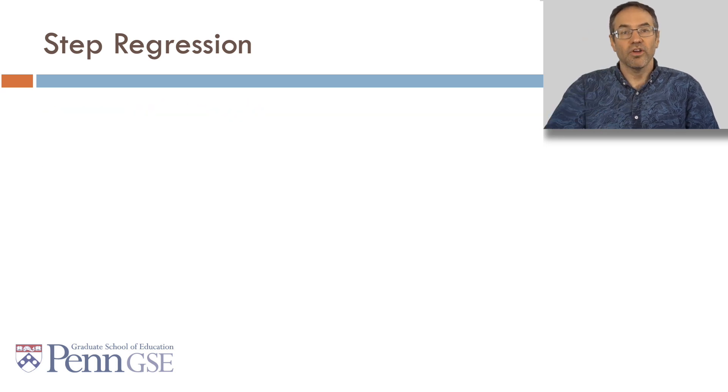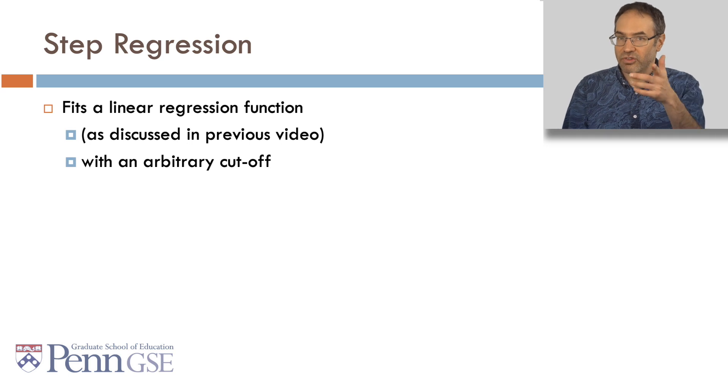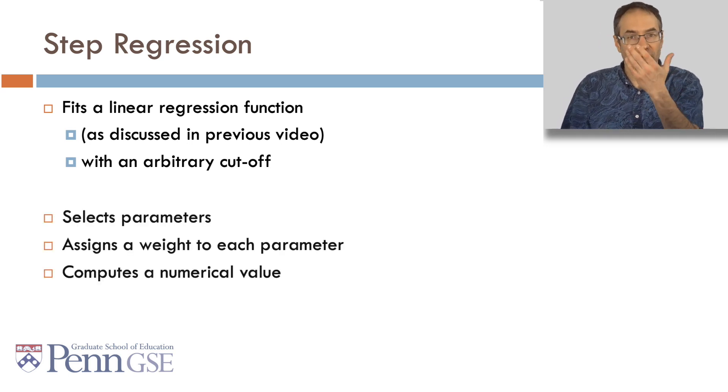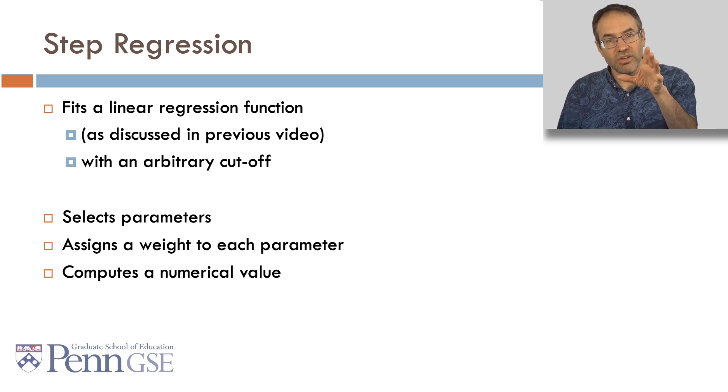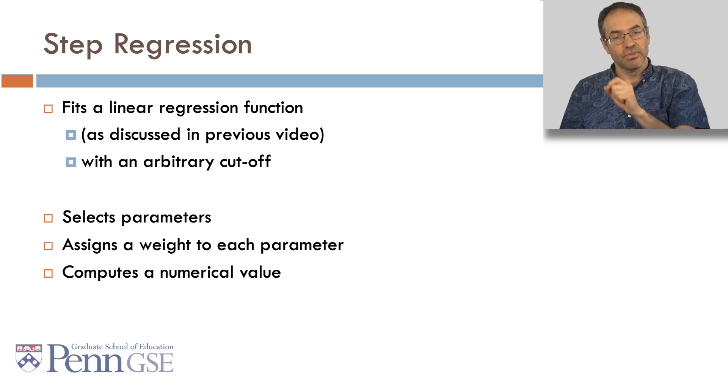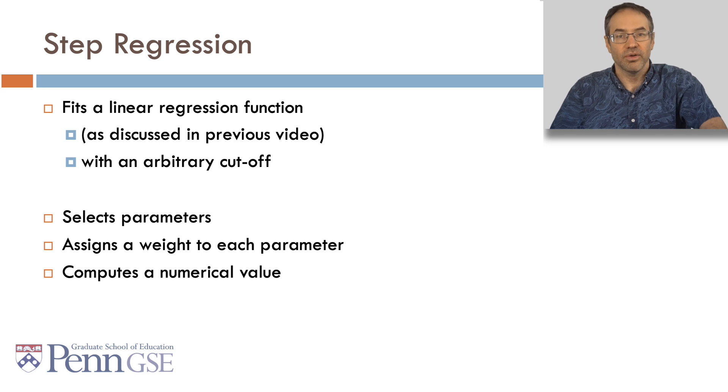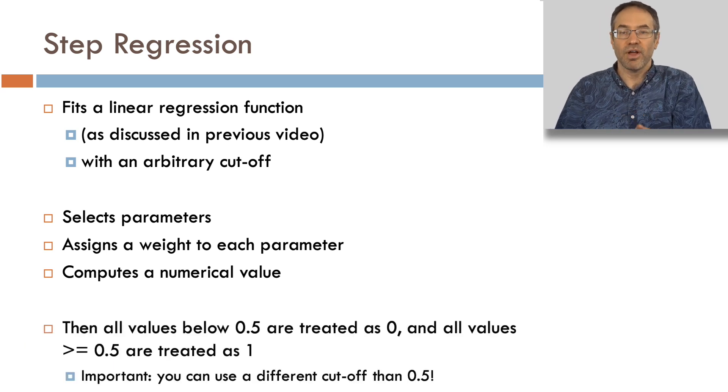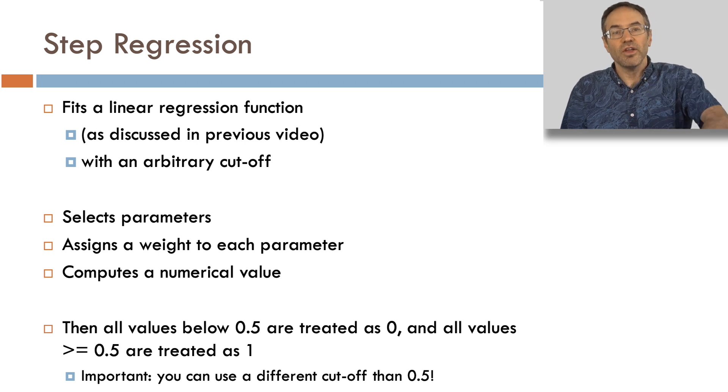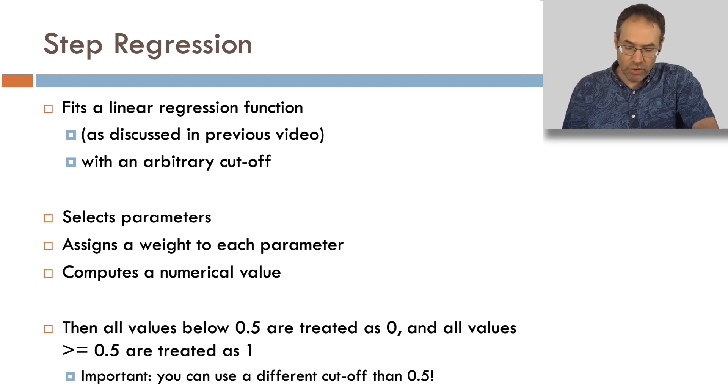In step regression, we fit a linear regression function, as discussed in the previous video, with an arbitrary cutoff. The algorithm selects parameters, assigns a weight to each parameter, and then multiplies the weights by the features, by the predictors, adds them all together to compute a numerical value. And then all values below 0.5, or some other magic cutoff, are treated as 0, and all values greater than or equal to 0.5 are treated as 1.